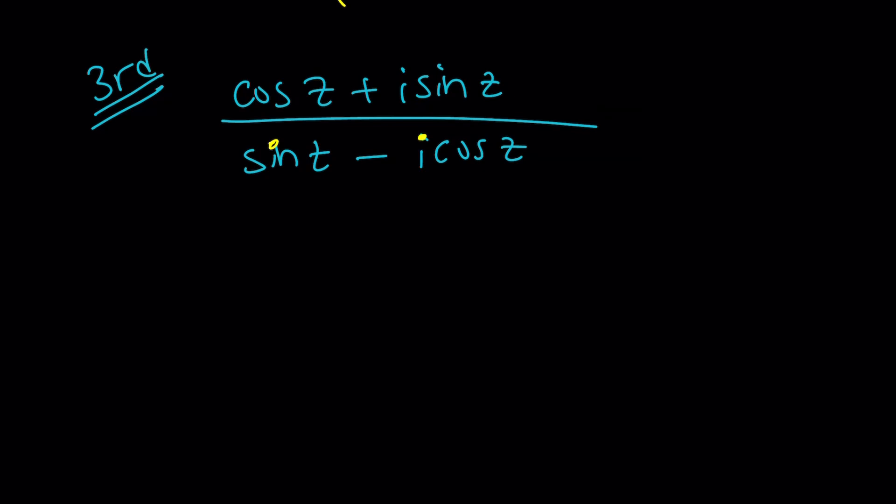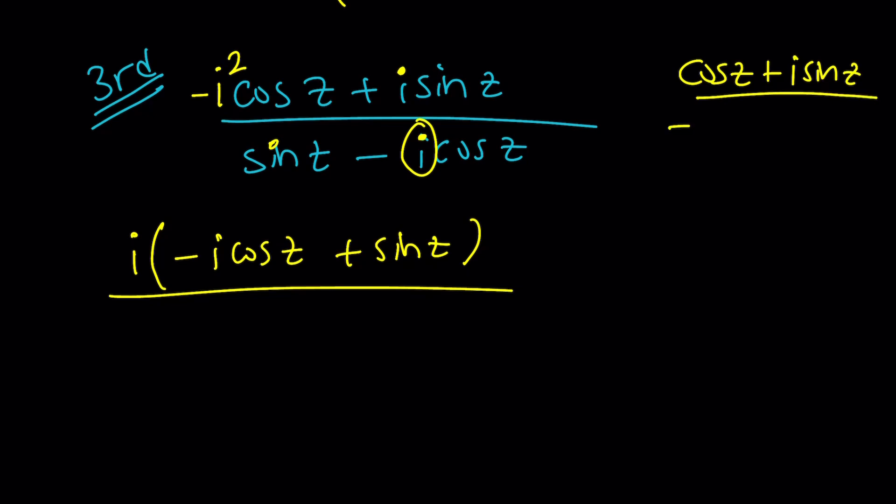I'm going to factor out something and that's going to be I. Before I do that, there's no I in front of cosine z so I'm going to put a little I squared, but I squared is negative one so I put negative I squared. We're going to factor out an I here. That gives us negative I cosine z plus sine z divided by. The reason I factored out an I was because I have cosine z and negative I cosine z. If I could factor it out, that would be nice.